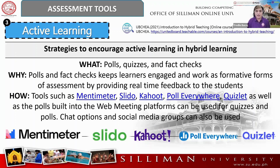The third category is active learning — strategies to encourage active learning in hybrid learning. Example scenarios include polls, quizzes, and fact checks. Polls and fact checks keep learners engaged and serve as formative assessment by providing real-time feedback to students. Tools such as Mentimeter, Slido, Kahoot, Poll Everywhere, Quizlet, as well as polls built into web meeting platforms, can be used for quizzes and polls. Chat options and social media groups can also be used for this activity.